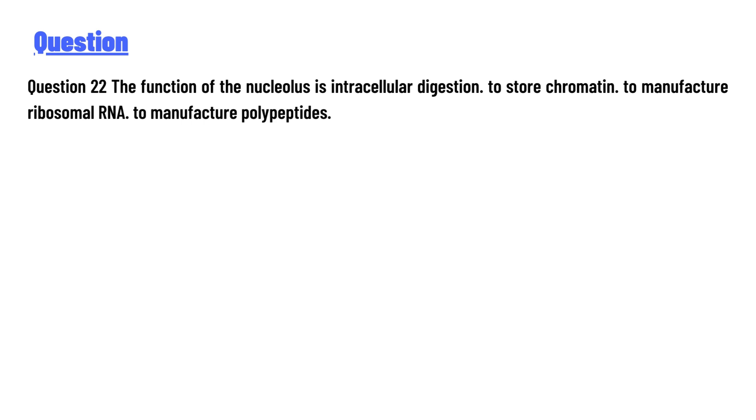The options are: intracellular digestion, to store chromatin, to manufacture ribosomal RNA, to manufacture polypeptides.